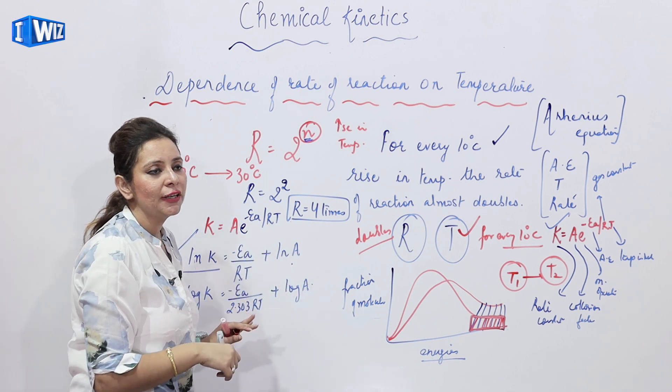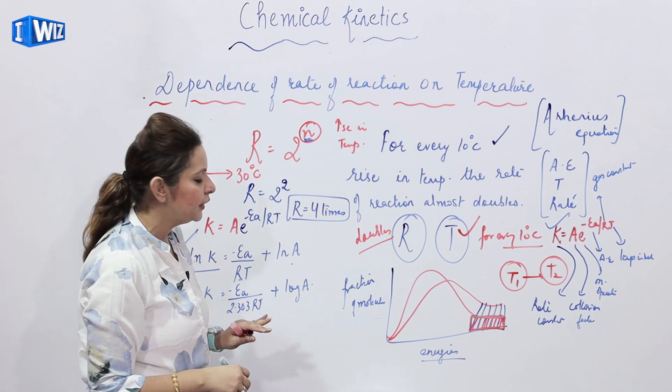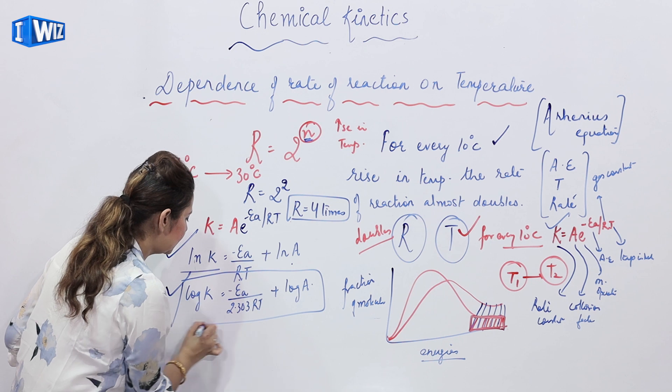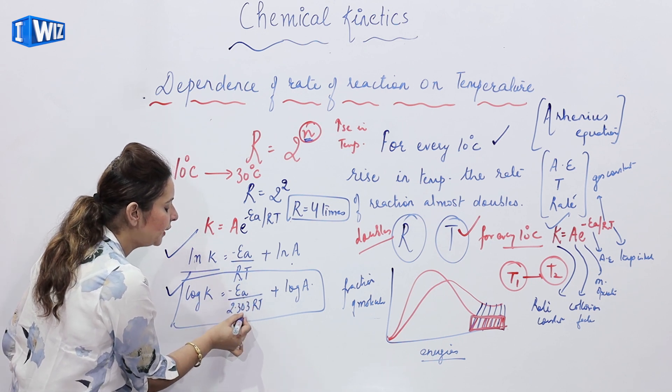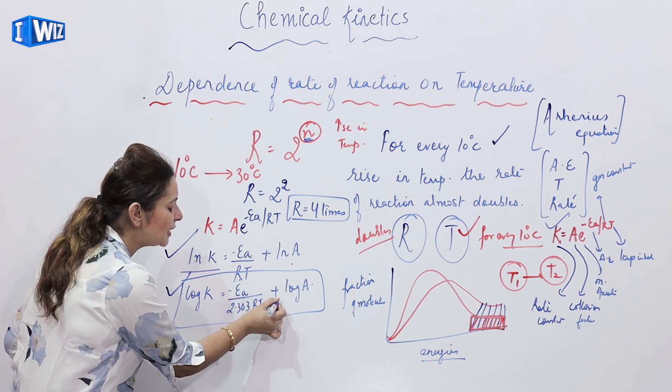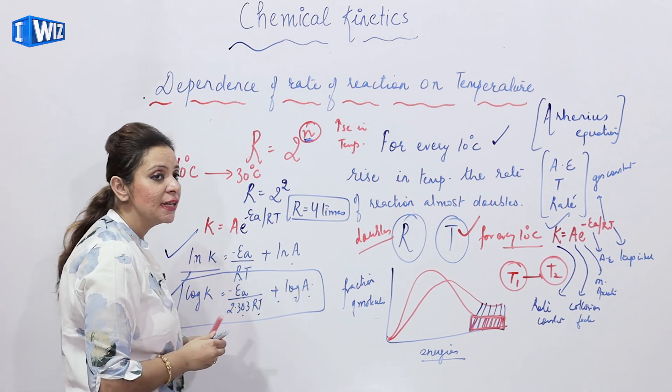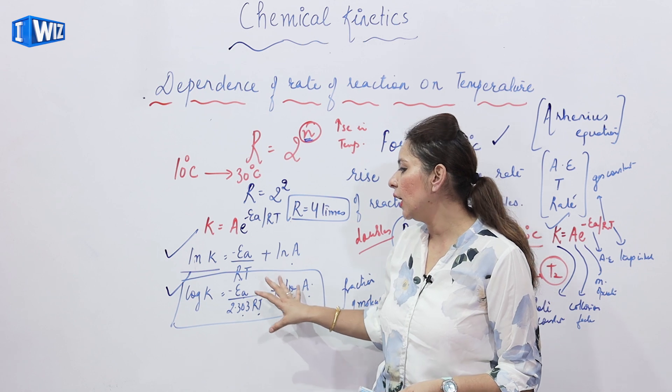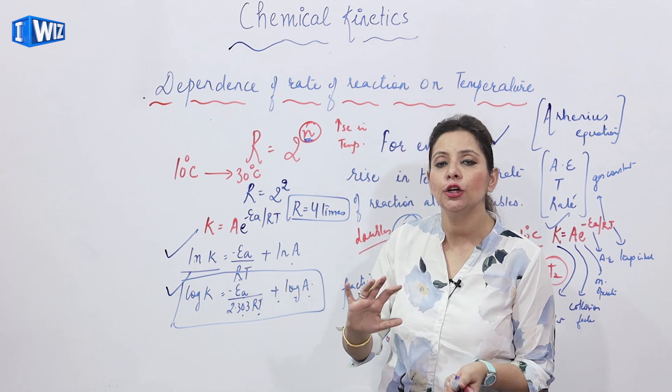And further when you convert it into log by substituting 2.303, we get an expression log K is equal to minus EA upon 2.303 RT plus log A. This is the expression which you can actually use in order to solve the equations if it is given in a log form.